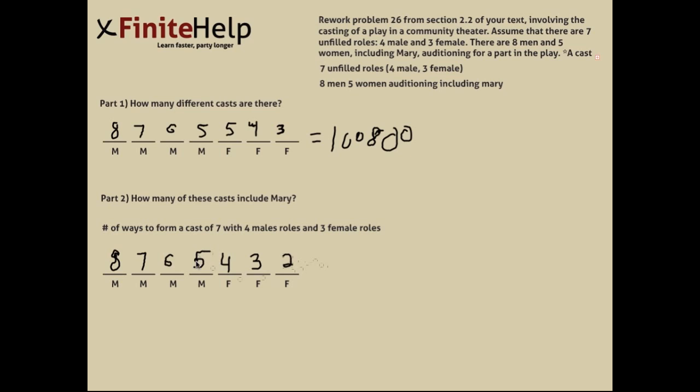And this basically ends up being eight factorial, which is going to come out to 40,320. And then you'll simply subtract 100,800 minus 40,320, and you'll get 60,480.